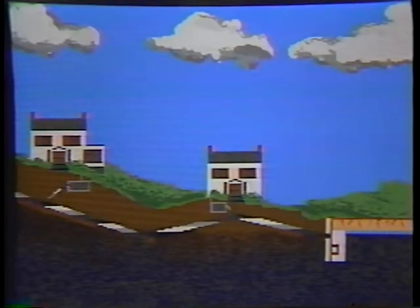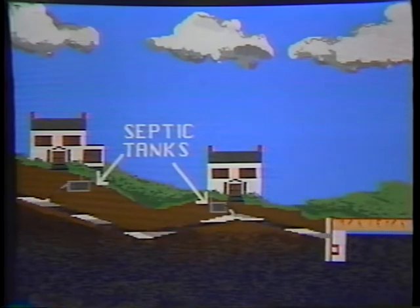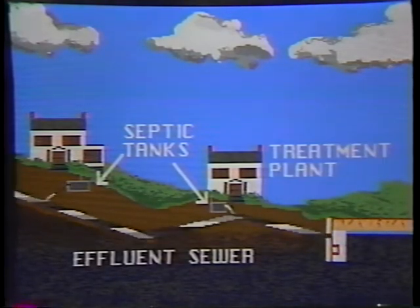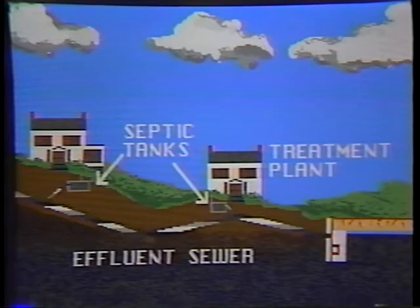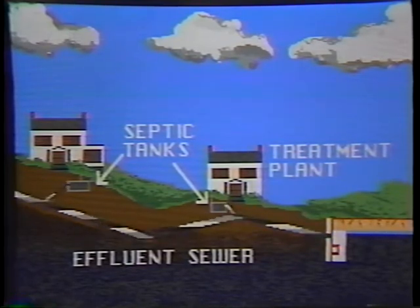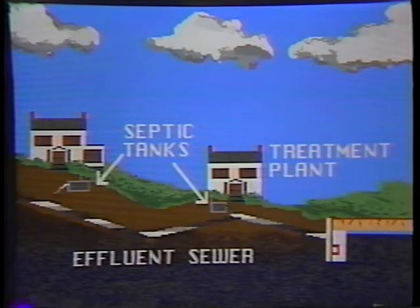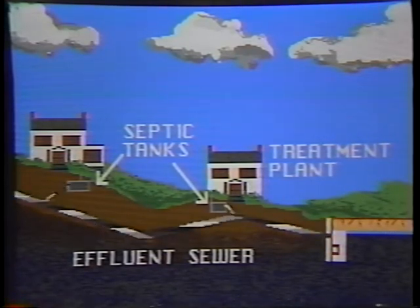Now let's look at the effluent sewer system. It carries the raw sewage from your house through a short pipe into a septic tank. The effluent flowing out of the tank enters an effluent sewer main, which leads to a treatment plant. Manholes are not required — simpler clean-outs are used instead. So the basic elements of the effluent sewer are septic tanks, sewer pipes, and treatment plant. Lift stations are sometimes needed, but there will be fewer of them.